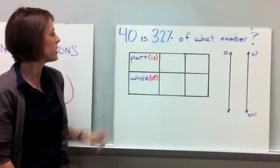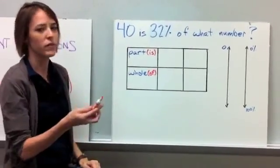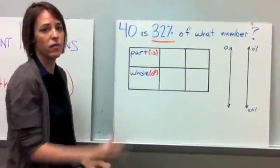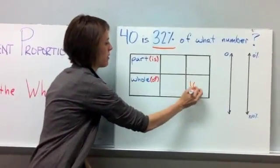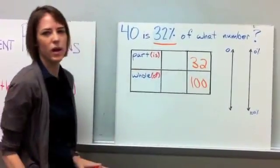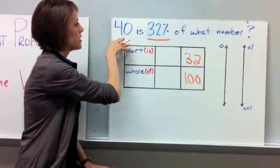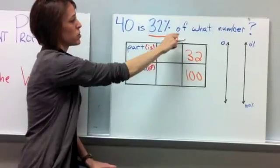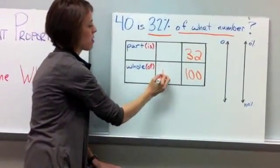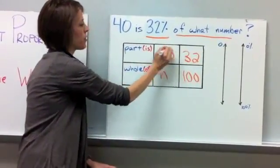Our first problem is 40 is 32% of what number? So like we've done in the past, we know that 32% is out of 100, so we put our 100 down here on the whole amount, and then 32 is out of 100, so we have that first part set up. And then we've got 40 is that percent of what number? So since we don't know what number, and it's the of, then that's going to be our variable and our unknown, and then we already know that the part is 40.